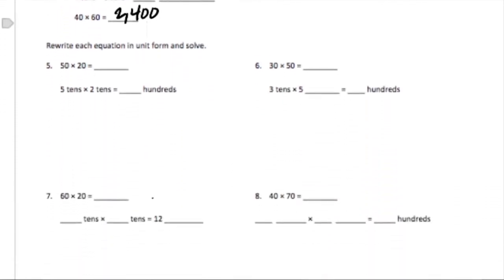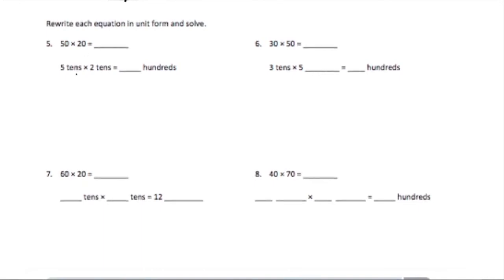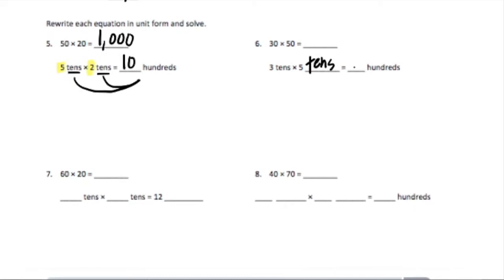For number five they want us to rewrite each of these in unit form and then solve. We have fifty, or five tens, times twenty, or two tens. That ten times ten is how they got this hundred. So that would be five times two times one hundred, or ten hundreds — ten hundreds equals one thousand. For thirty times fifty that would be three tens times five tens, which is fifteen hundreds, or one thousand five hundred.